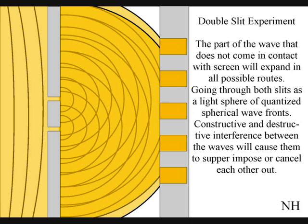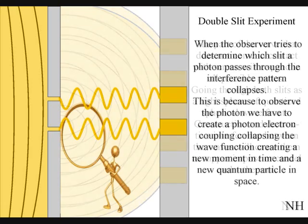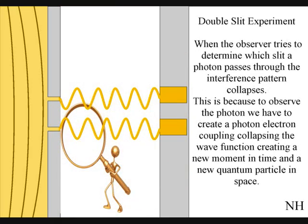When the observer turns on a detector to determine which slit a photon passes through, the interference pattern will collapse. This is because to observe the photon, we have to create a photon-electron coupling, collapsing each wave front into a new quantum particle that will have its own position in space and time.